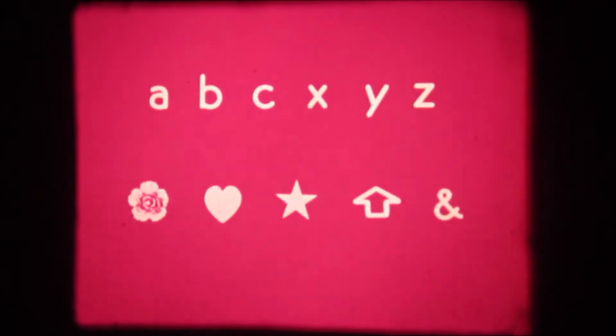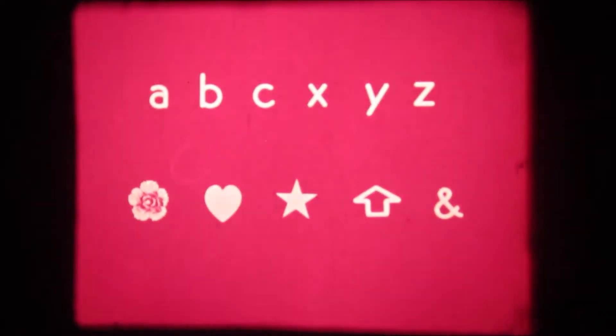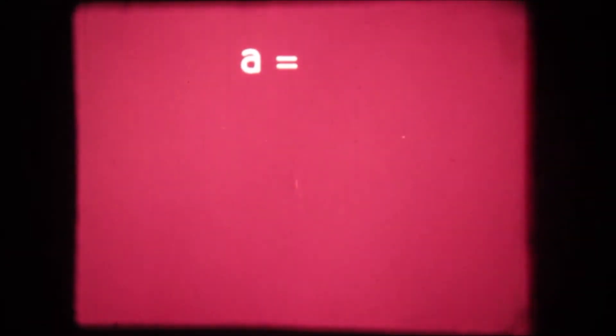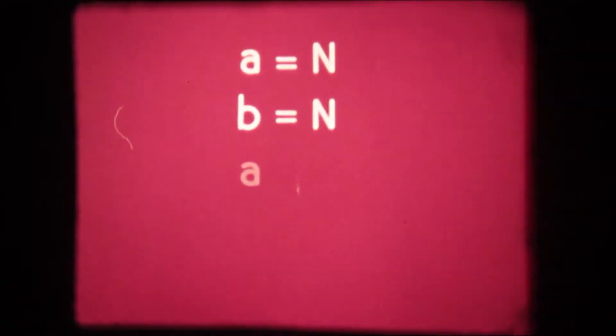Sometimes the symbols won't represent any particular quantity at all. For instance, we might make the statement that if there is a quantity which we will call A, which is equal to some other quantity called N, and there is a third quantity which we will call B, which is also equal to N, then the quantity A is equal to the quantity B.